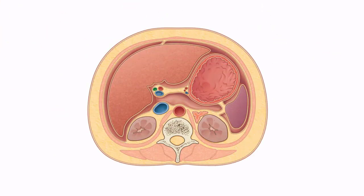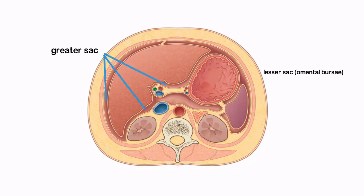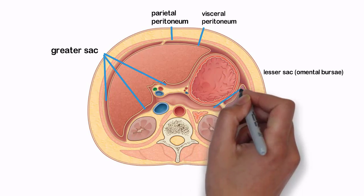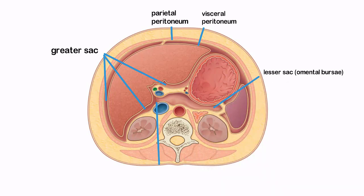The peritoneal cavity includes the greater sac and lesser sac, or omental bursa. The greater sac is located between the inner surface of the anterior abdominal wall and the outer surface of the abdominal viscera. It is bounded by the parietal and visceral peritoneum, and it communicates with the lesser sac through the epiploic foramen of Winslow.